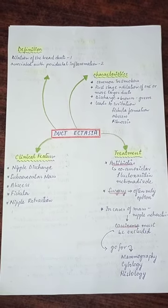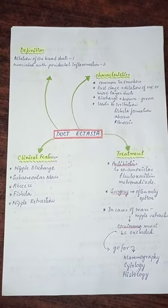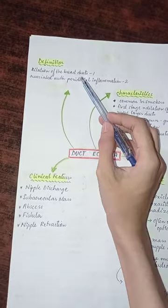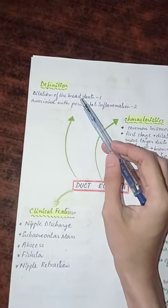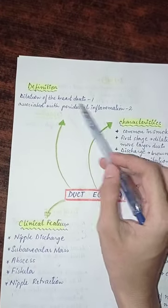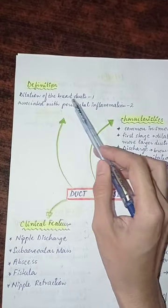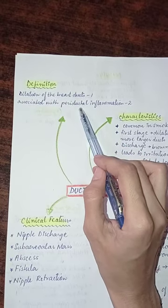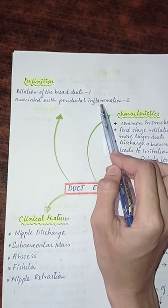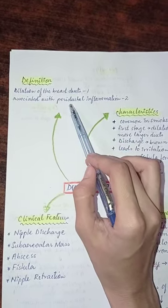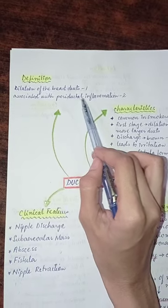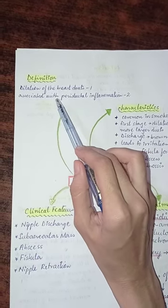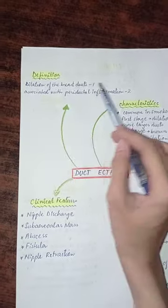This is Dr. Hena Beg and today's topic is duct ectasia. First, the definition. There are two points only: dilation of the breast ducts, and it is associated with periductal inflammation — the area around the duct is also inflamed. This is the reason why we include this point in the definition.